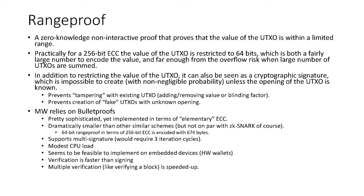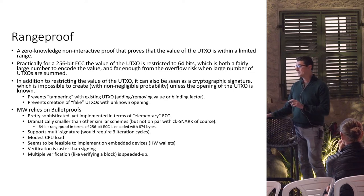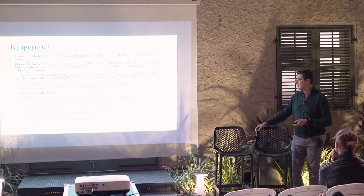If we attach a range proof to every output, we achieve two goals. First, it becomes impossible to encode negative numbers — for example, if you restrict to 64 bits within a 256-bit domain, a subtraction resulting in a negative number will definitely exceed 64 bits. Second, the range proof proves that it acts as a cryptographic signature of the UTXO. If I modify a UTXO without knowing its contents, there's no way I can create a valid range proof.